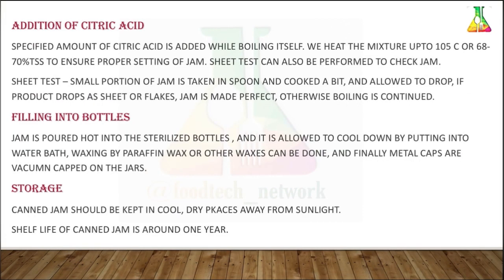Citric acid is added while boiling. It is not added in a large amount — for apple jam, 2 grams; for apricot, 2 grams; for carrot gel, 2.5 grams of citric acid. It is added during boiling at 105°C.